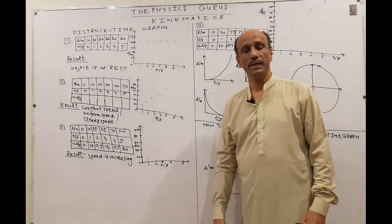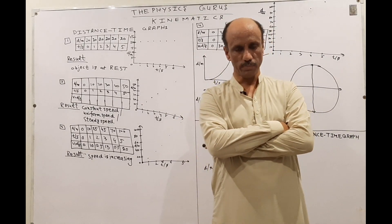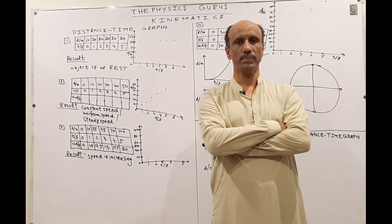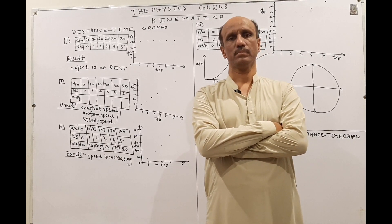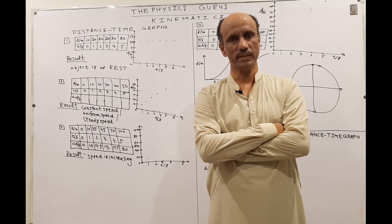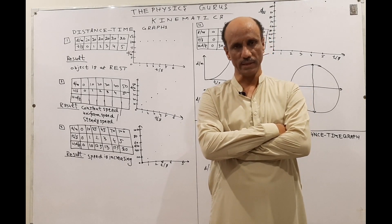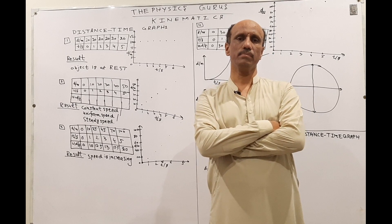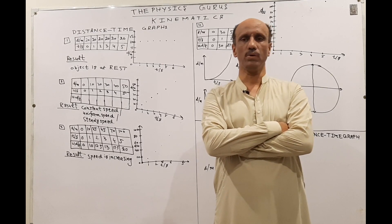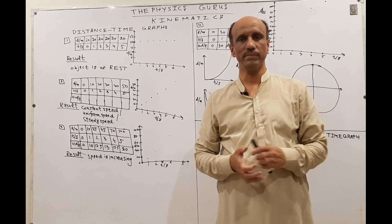Hello once again, I am Muhammad Kamran Halil from YouTube channel The Physics Gurus. We have already discussed the chapter we started from A-level physics, unit number 2: kinematics 5054 — we've already discussed speed, velocity, acceleration, distance, and displacement. Now in this topic we will discuss a very important part of kinematics which is related with the graph. Many students are not able to draw the graph accurately and are very confused, so today we will discuss some basic concepts related with the distance-time graph.